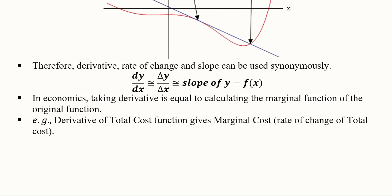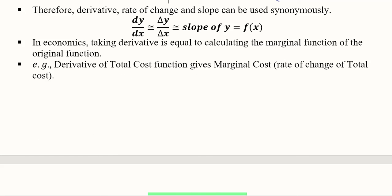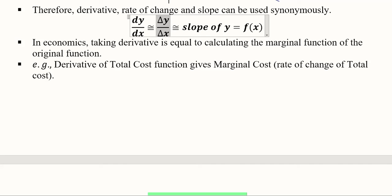To summarize what we have learned: the derivative of function y with respect to x is nearly equal to the discrete analysis of the change in y due to change in x, which also shows the slope of y = f(x). These three things are equated: if I want to find the slope, I can find the discrete change in y due to change in x, or alternatively I can find the derivative of the function y with respect to x.